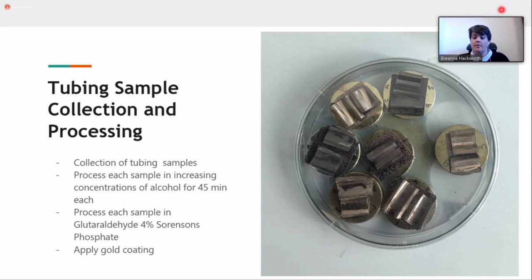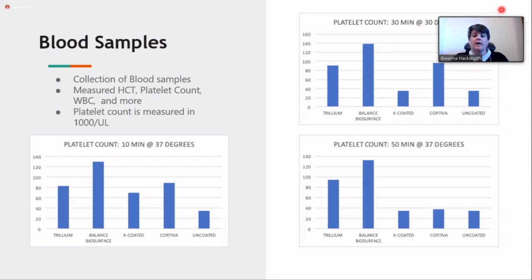We also took blood samples at the same time that we collected the tubing samples. With those blood samples, we measured hematocrit, platelet count, white blood cell counts, and more. But one thing that really stood out to us was the platelet counts. As you can see, the trillium and balanced biosurface—the platelet count stayed relatively similar throughout the whole 50-minute trial, where X-coated and Cortiva did fluctuate as the trials went on more than the trillium and balanced biosurface. So we did think that that was really interesting.